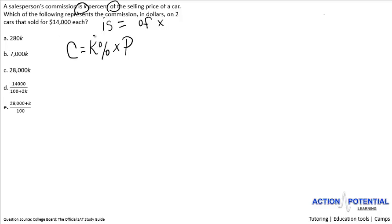Next we need to figure out what the question is asking for and what we're already given. Which of the following represents the commission? That's your question, and that means that C, your commission, is what you're solving for.